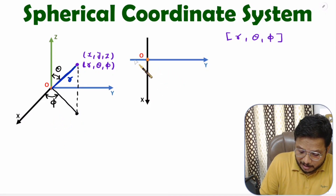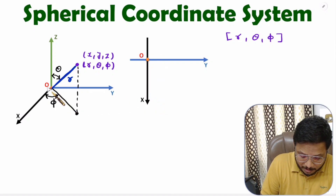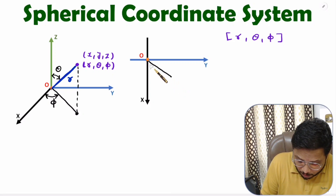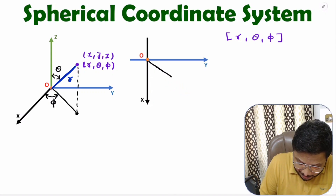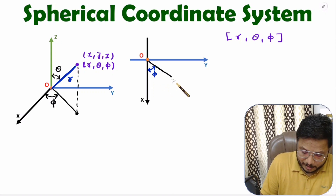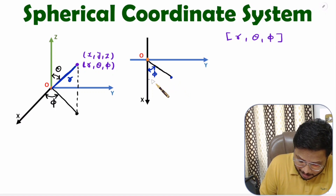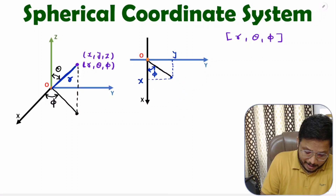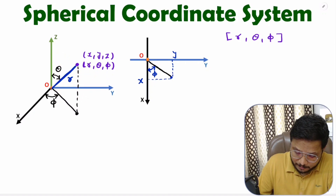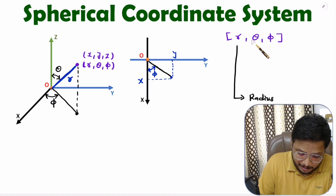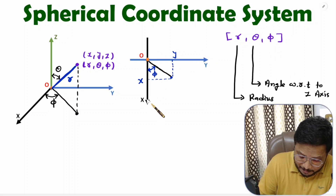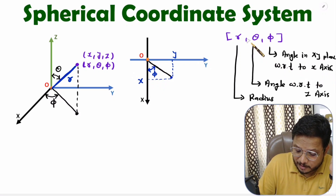So if you observe here, we have the XY plane and you can view it from the top view. Here we will have one line making angle phi. This point has an X coordinate and a Y coordinate. So to summarize: R is the radius of this point with respect to the origin, theta is the angle of the line with respect to the Z axis, and phi is the angle in the XY plane with respect to the X axis. That is how these coordinates are defined.